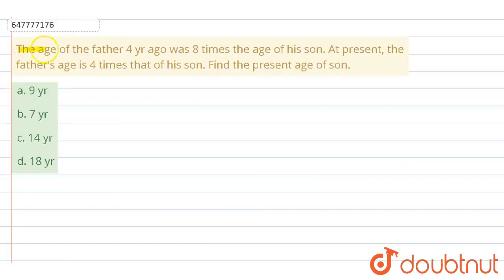So question here is the age of the father 4 years ago was 8 times the age of his son. At present the father's age is 4 times that of his son. Find the present age of son and we have options 9 years, 7 years, 14 years and 18 years. So this is the question.